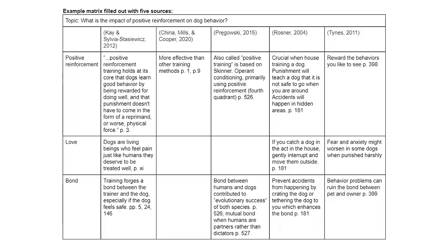The matrix puts each source you want to use in the columns. In the header row at the top of each column, you put the citation of your source. Since space is limited, we recommend using the in-text citation style. Each row represents a main idea that you can discuss in your paper or presentation. Each main idea is placed in column 1. What you call the main idea is up to you, but short, descriptive names are best. The matrix is just for your own use, so you can call it whatever you like.